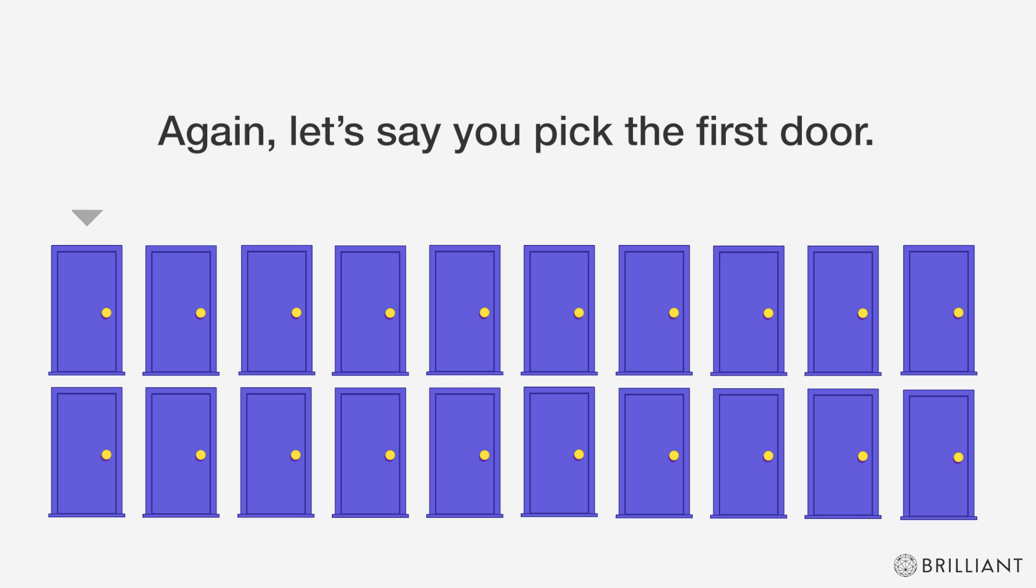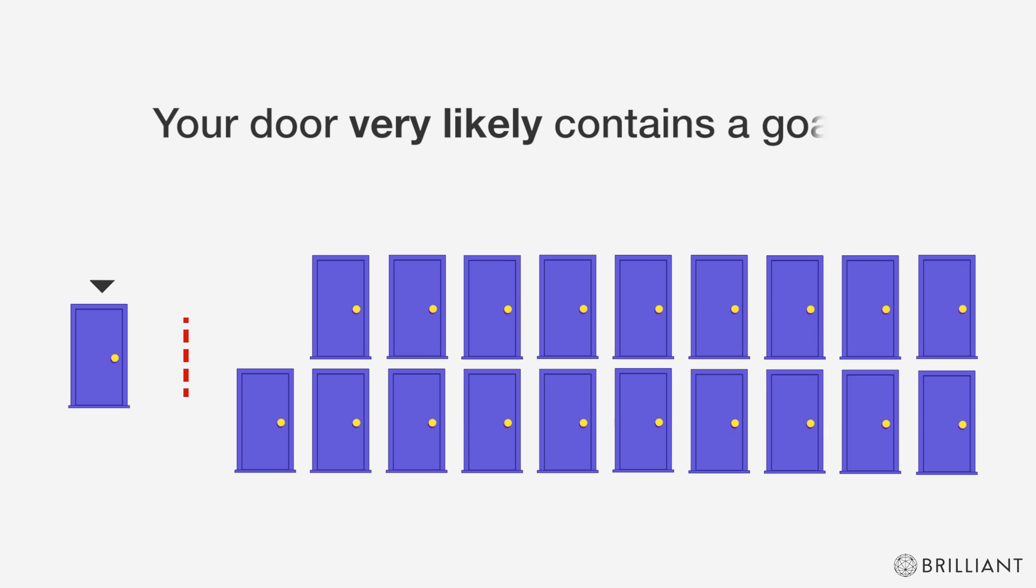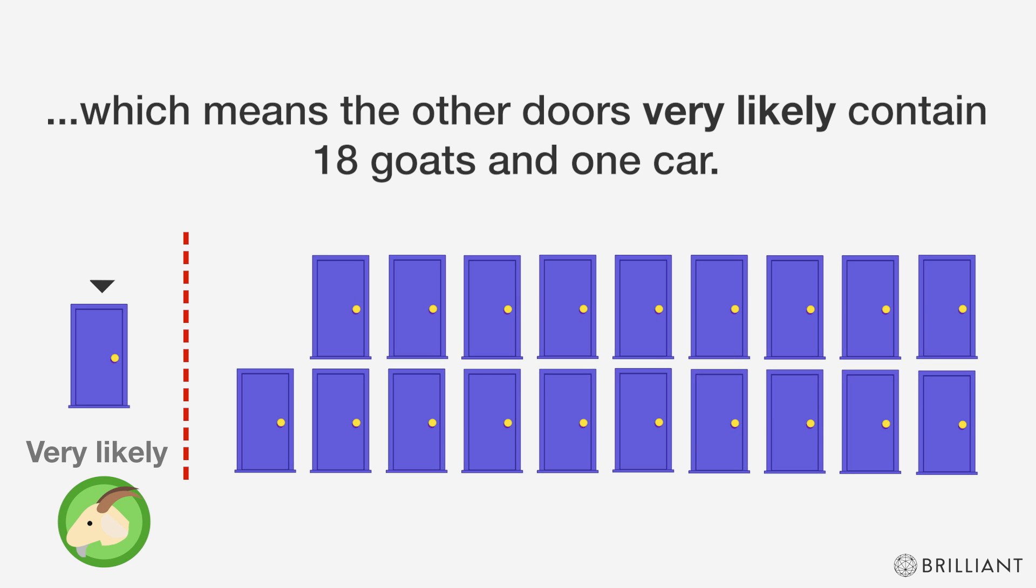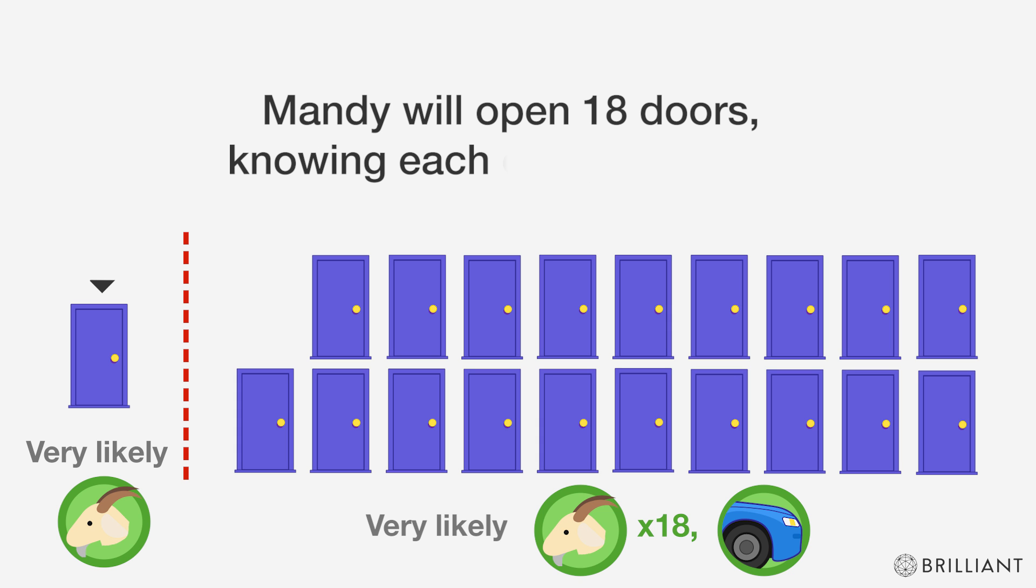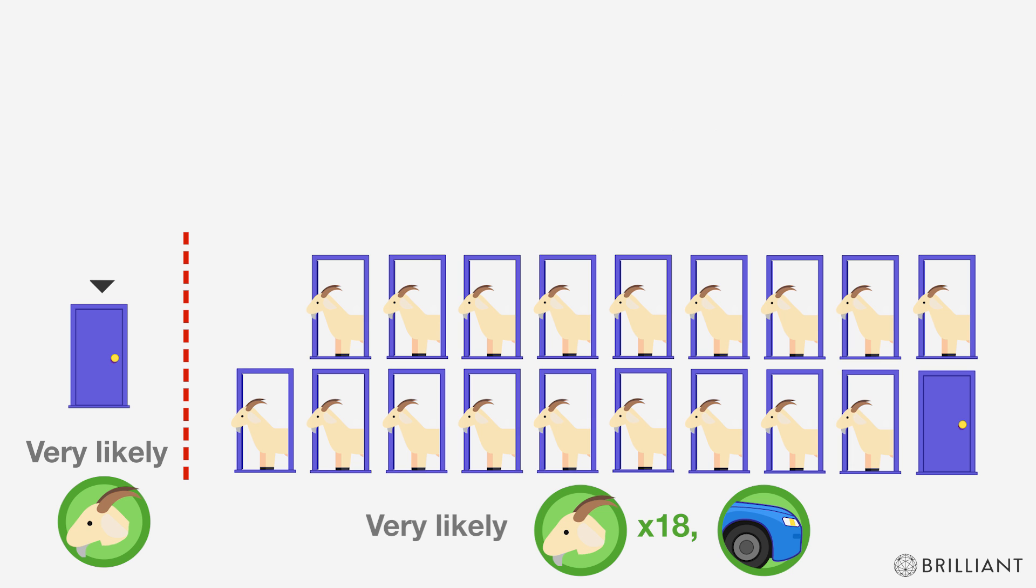Your door very likely contains a goat, which means the other doors very likely contain 18 goats and one car. Mandy will now open 18 doors, knowing each contains a goat. Should you switch or stay?